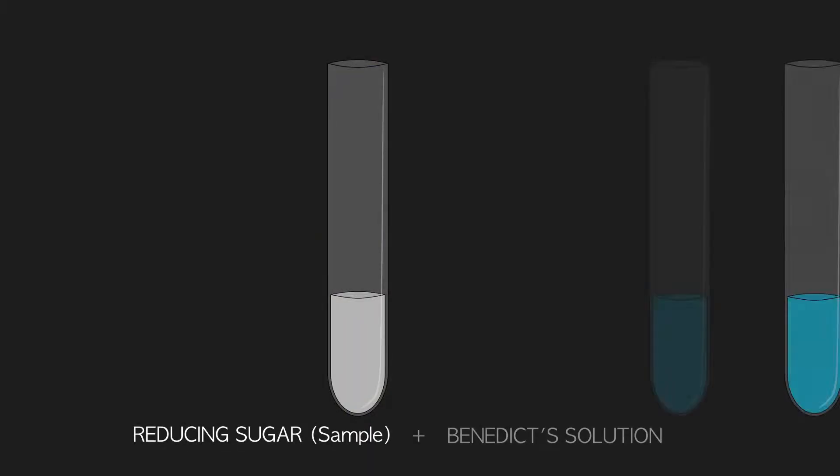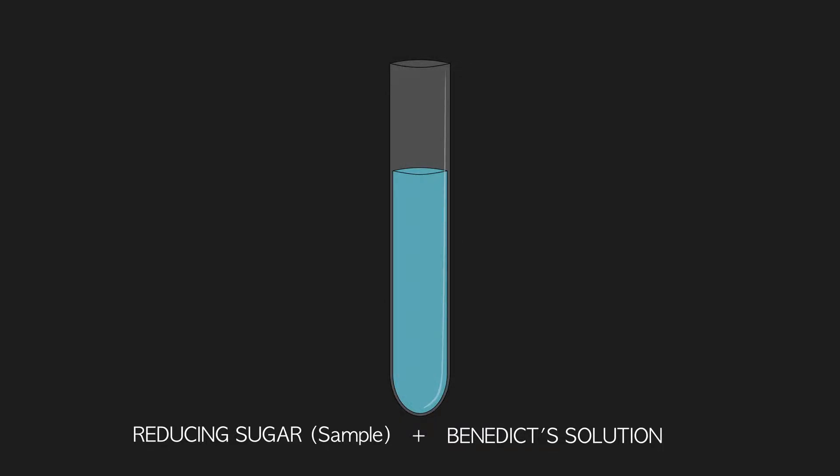If a reducing sugar is added to the Benedict's solution, a yellow precipitate is formed.